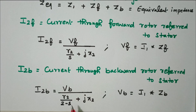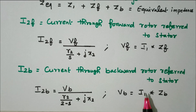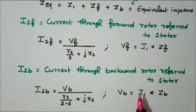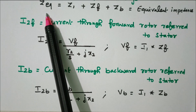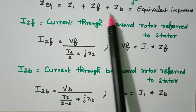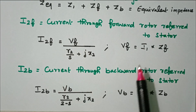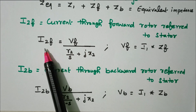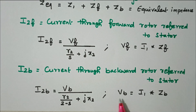So s refers to forward rotation and 2 minus s refers to backward rotation. Starting from the stator and moving to the two imaginary rotors — forward and backward — we calculated zf and zb. From these we get the total equivalent impedance z_eq equals z1 plus zf plus zb, then forward voltage and current, and reverse voltage and current.